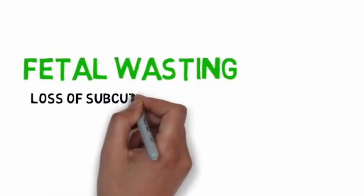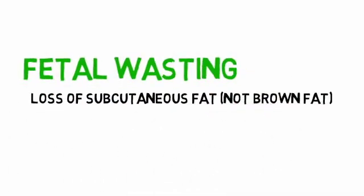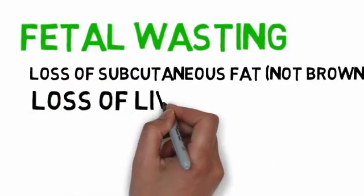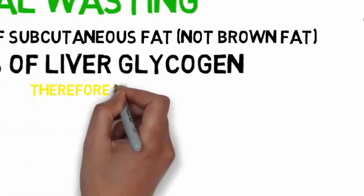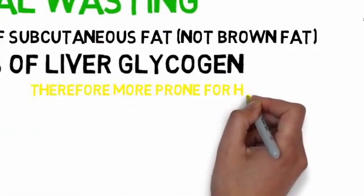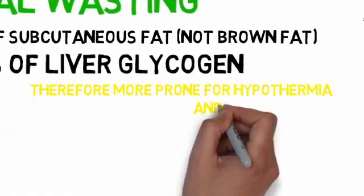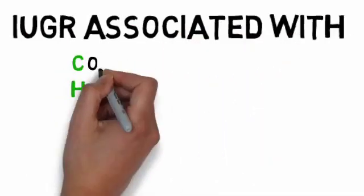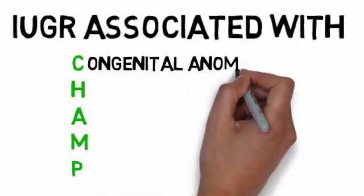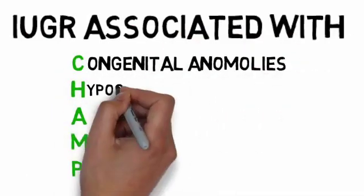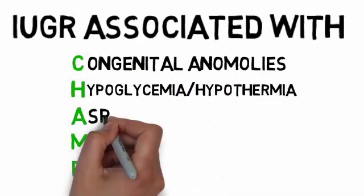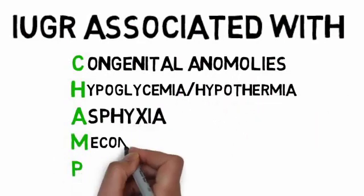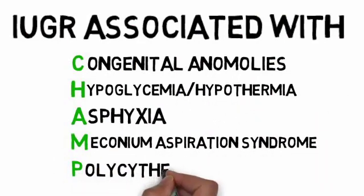Fetal wasting consists of loss of subcutaneous fat (not brown fat) and loss of liver glycogen. Therefore, the baby is more prone to hypothermia and hypoglycemia. IUGR is associated with the mnemonic CHAM: Congenital anomalies, Hypoglycemia, Hypothermia, Asphyxia, Meconium aspiration syndrome, and Polycythemia.